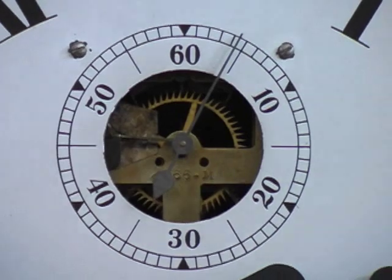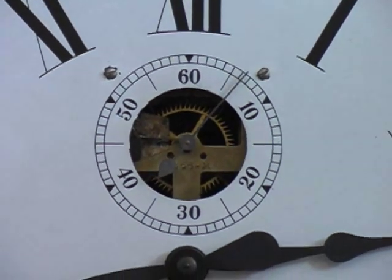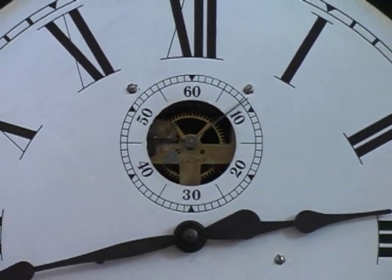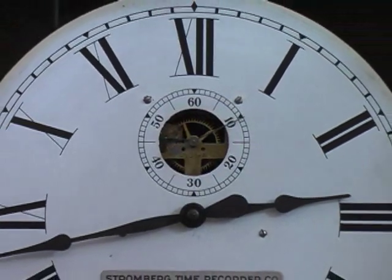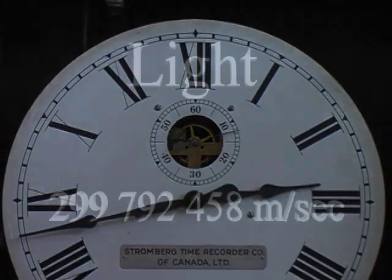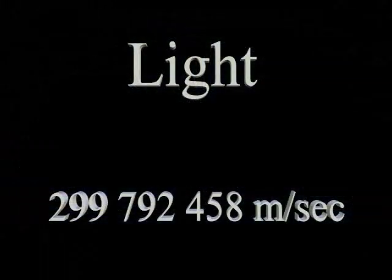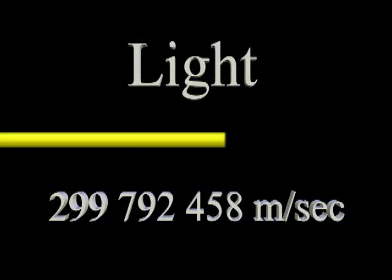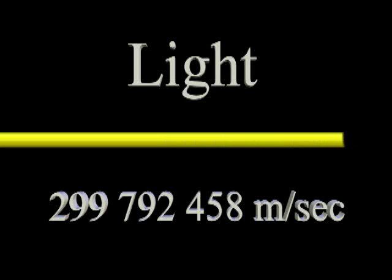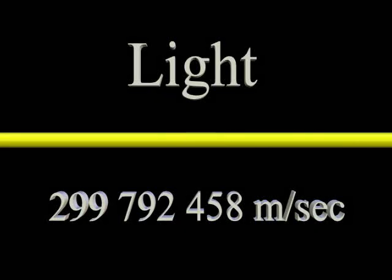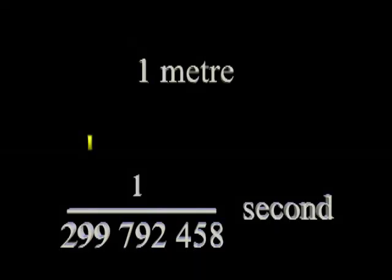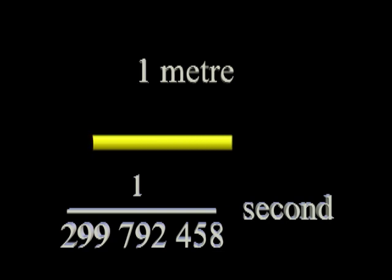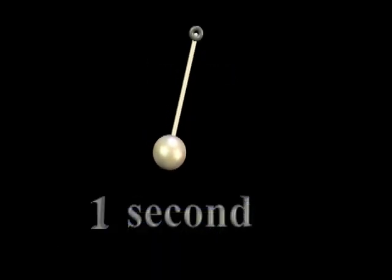In 1983, the dilemma appeared to have been solved when the definition of the meter returned to time. The speed of light in a vacuum is defined as 299,792,458 meters per second. This means that one meter is the distance that light travels in this fraction of a second. We are now using time to define the meter, just like Talleyrand's pendulum-based meter of 1790.